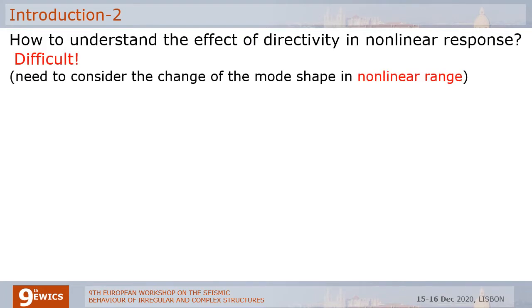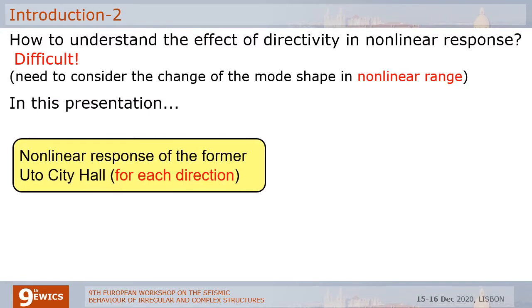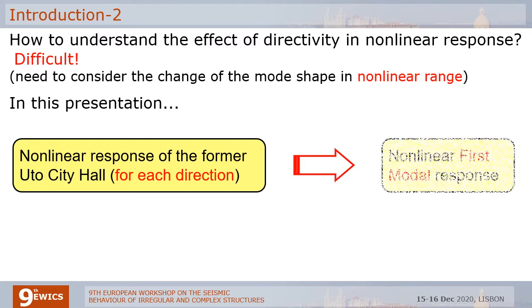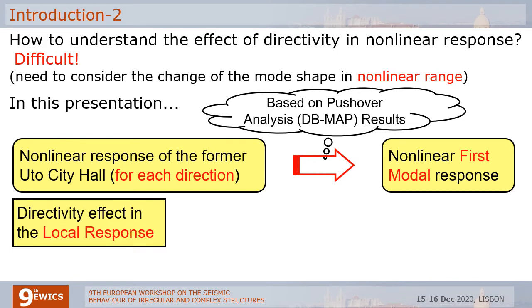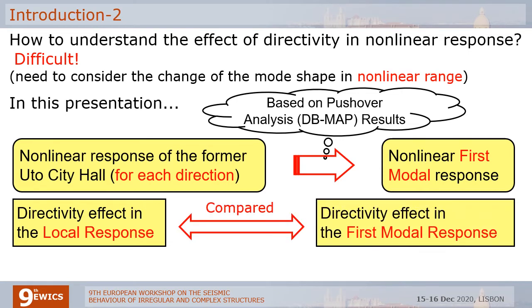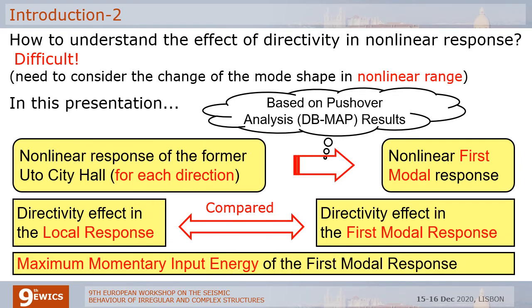It is difficult. In my opinion, it needs to consider the change of the mode shape in the nonlinear range. In this presentation, the nonlinear response of the former Uto City Hall is analyzed considering various directions of seismic input. Then, the nonlinear first mode response is calculated for each result. This is done based on the pushover analysis results considering the change of the first mode shape. Based on the results, the directivity effect in the local response is compared to that of the first mode response, and the maximum momentary input energy of the first mode response is also discussed for seismic intensity measurement.